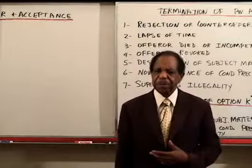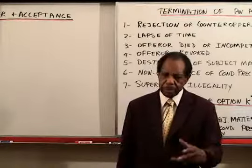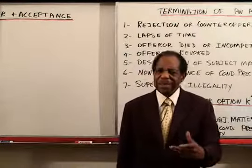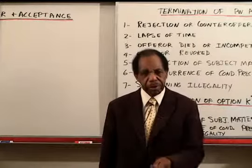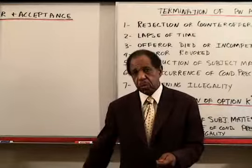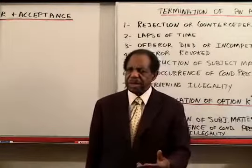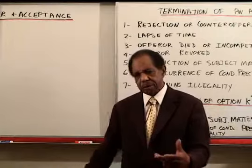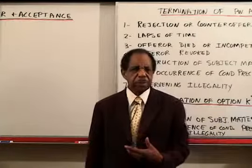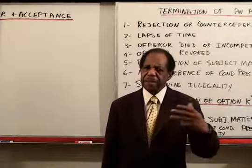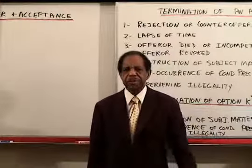The way we get to an enforceable bargain is typically that I make a proposal to you — I describe the bargain and say not only am I proposing this, but I'm also proposing that we agree if either of us doesn't do what they're supposed to do, we want the public to come in and enforce it. So when I make my offer to you, my offer is describing the bargain and proposing that we have this intent of public enforcement.